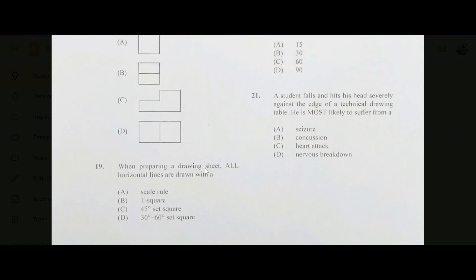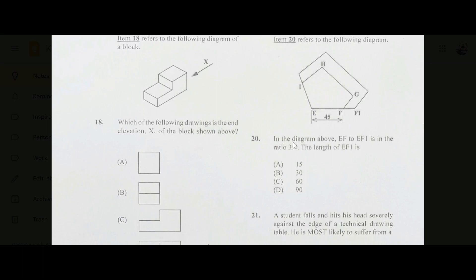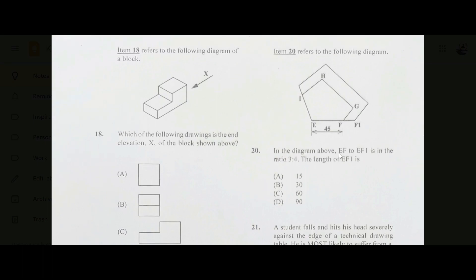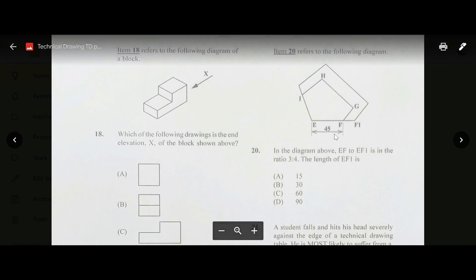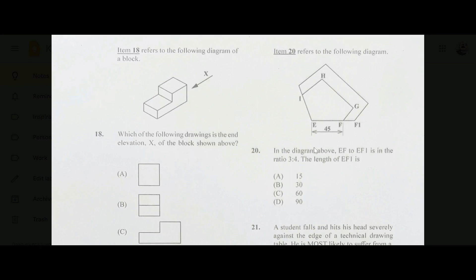Number nineteen: when preparing a drawing sheet, all horizontal lines are drawn with a T-square. The answer is B — we always draw horizontal lines with T-squares. Number twenty: EF to EF1 is in the ratio 3:4. EF is 45 mm, which contains 3 units, so each unit is worth 15. EF1 is 4 units, so 4 × 15 = 60. The answer is C, 60.